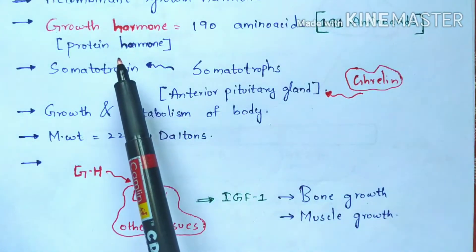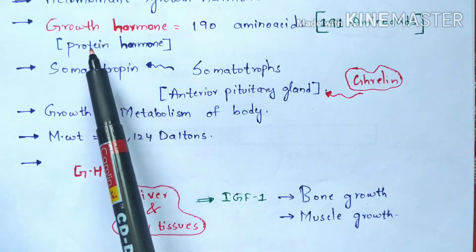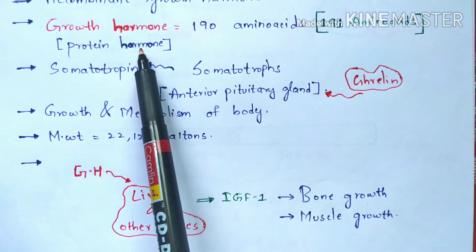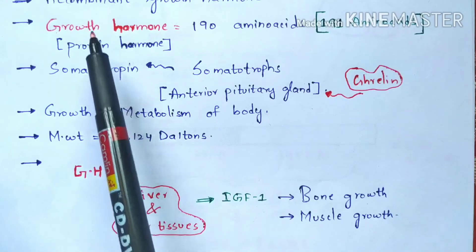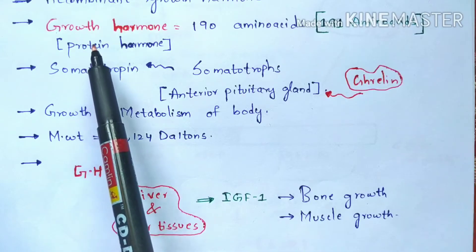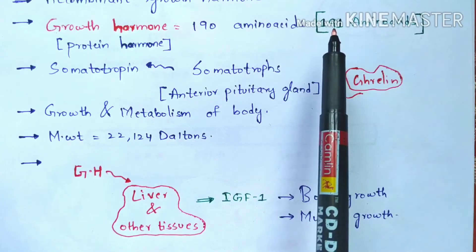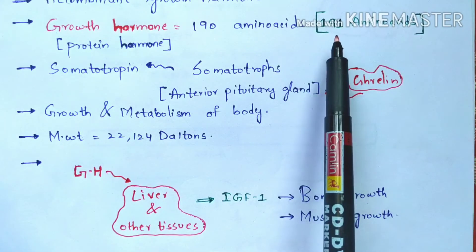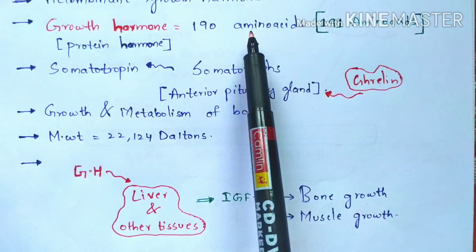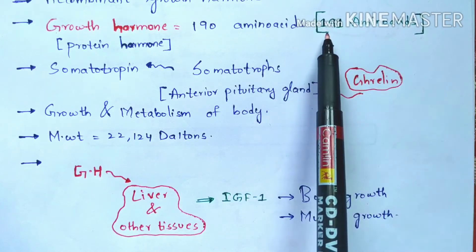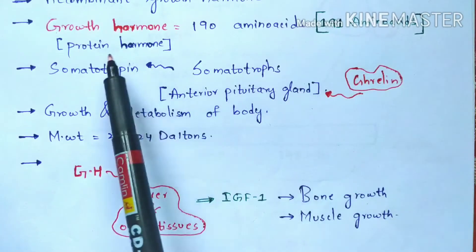This growth hormone is called a protein hormone because it is made up of amino acids. We know that proteins are made up of a group of amino acids. This growth hormone consists of 191 amino acids. In some books it is mentioned as 190 amino acids, but according to me the growth hormone consists of 191 amino acids.